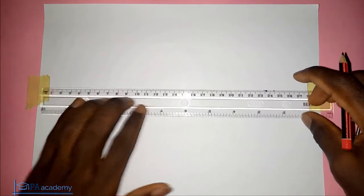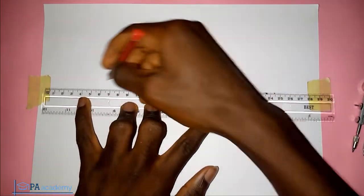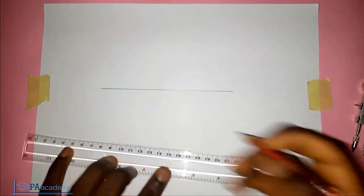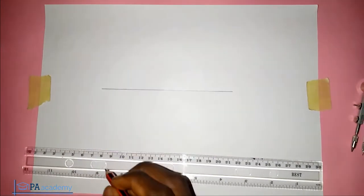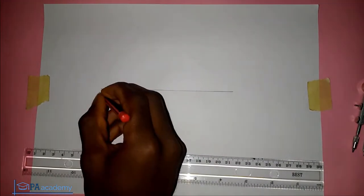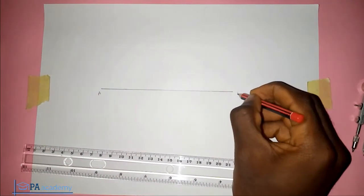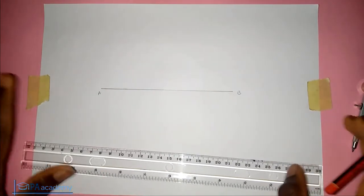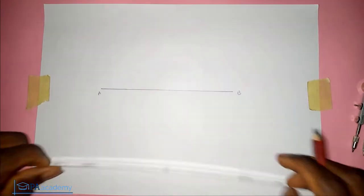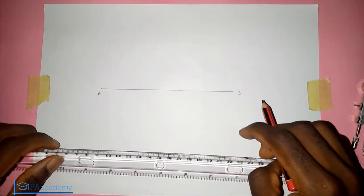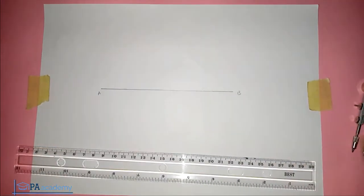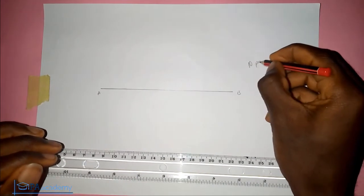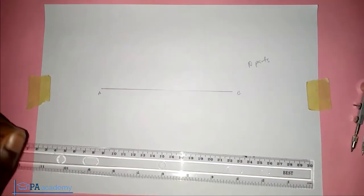The first thing I'm going to be doing is to draw a straight line. So here is a straight line. This is point A and this is point B. If you look at this line, you can see that I didn't measure it — I just drew a straight line. And if you are asked to divide this line into 10 equal parts, so how do we go about it?